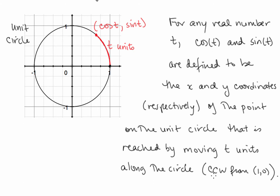We're talking about counterclockwise movement from the point (1, 0). So we're starting there, and if we measure t units along the circle, wherever we end up, the x coordinate of that point is cosine t, and the y coordinate of that point is sine t. That's how we define sine and cosine of a real number t.